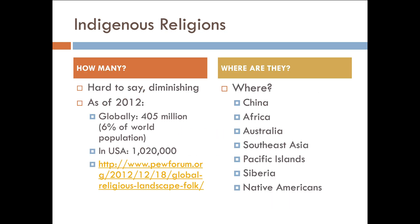So where are they and how many are they? It is hard to say — the numbers are diminishing in some areas of the world. As of 2012, which is the latest data from the Pew Research Institute, globally there are about 400 million, or 6% of the world's population. In the United States, there are just over a million. If you want the absolute latest data, go to the Pew Forum and find some of their polls.